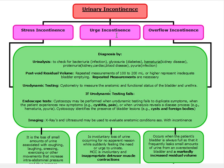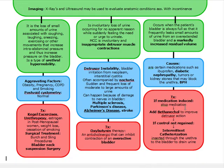To summarize the contrast: urge incontinence is too much detrusor contraction, while overflow incontinence is too little contraction. For too much contraction, give an anticholinergic like oxybutynin. For too little contraction, give a cholinergic like bethanecol. If control is not regained with medication, that's when we move to intermittent catheterization.